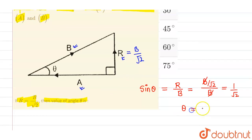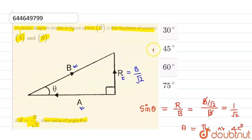So from here, I can say that theta is nothing but pi by 4 or we can say this is 45 degrees. So the correct option is option 2 which is 45 degrees and rest all options are incorrect.